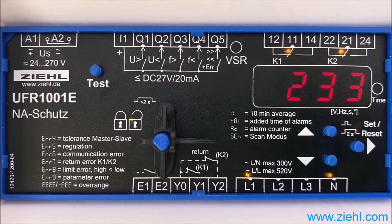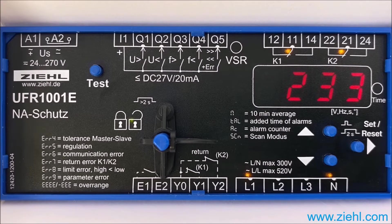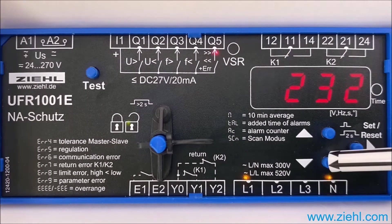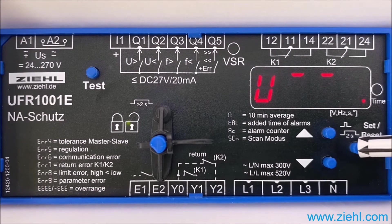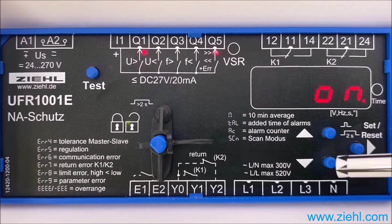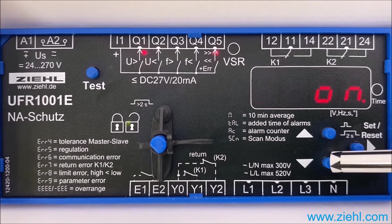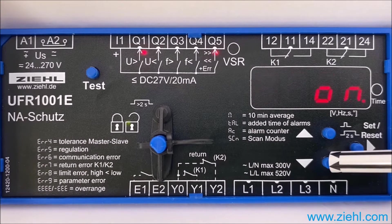The UFR1001E from Ziehl Industry Electronic has a code lock which is activated at works, for example, in program 2. If you want to adjust the value when the code lock is activated, for example the value for a second level overvoltage, the display shows code and draws your attention to the fact that a code lock is set.